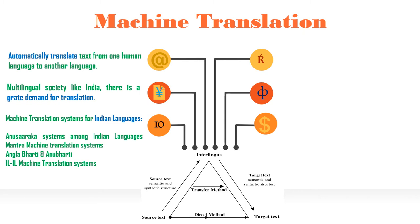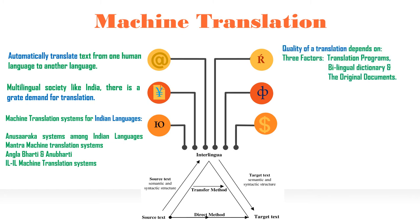Some systems include: Anusaraga system among Indian languages; Mantra, a machine-assisted translation tool for Indian languages; Anglo-Bharathi and Anubharathi; and Indian languages to Indian language machine translation systems. The quality of translation depends on three factors: the translation program or software, the bilingual dictionary, and the original document.